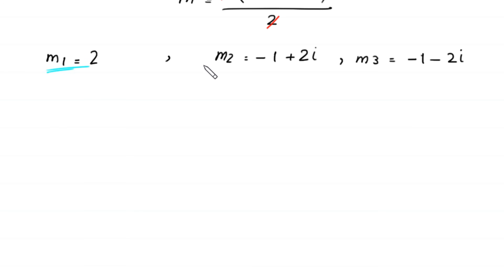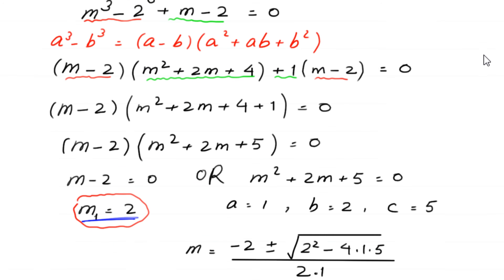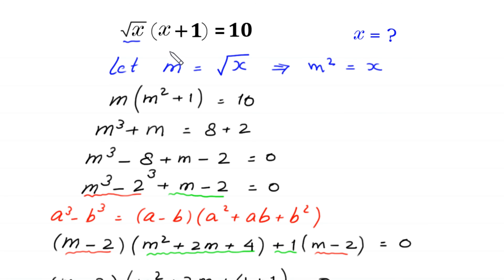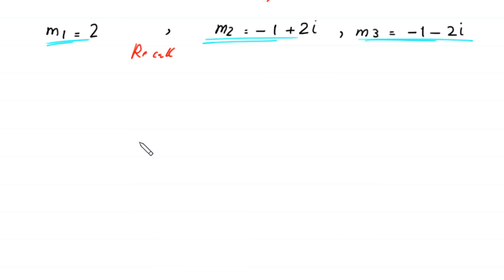So these are the three values of m, but we need to find the values of x. Now, recall that we have supposed that square root of x is equal to m. In this equation, first we put this value of m₁, which is 2.